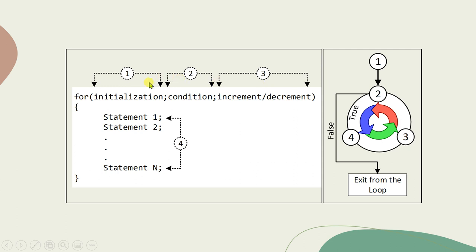After initialization, the control goes directly to the stopping condition (2). If the condition is true, we execute the statements in the loop body (4). After executing those statements, we go to the increment/decrement part (3), which is the loop update. After the loop update, control goes back to the stopping condition (2) again.